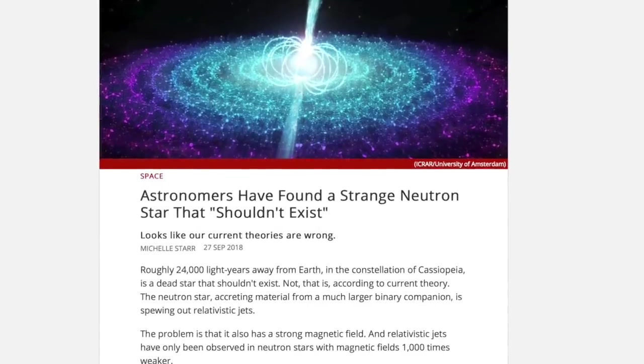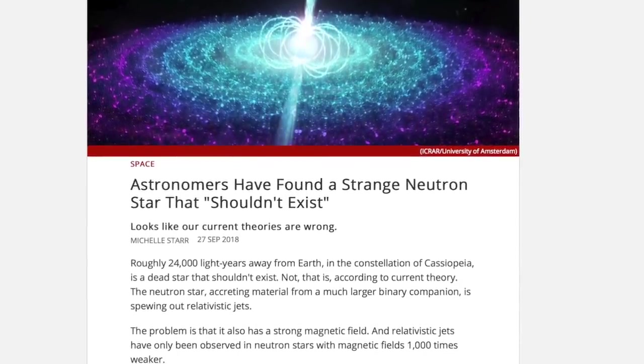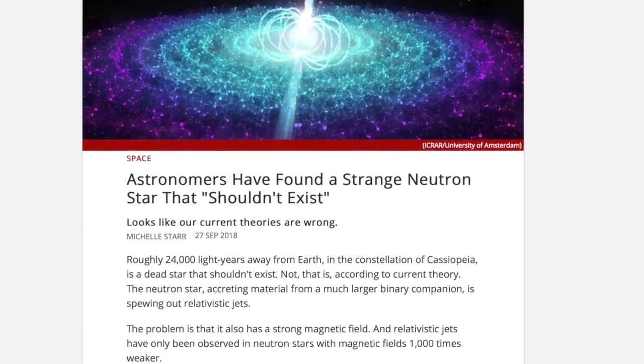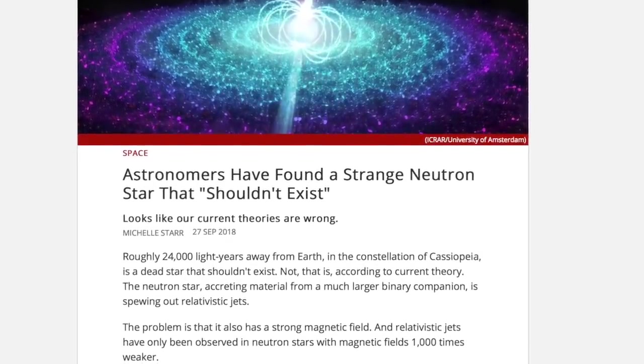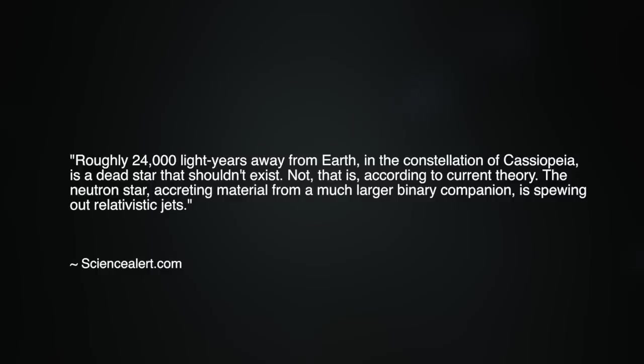And today, scientists are again puzzling over the behaviors of a so-called neutron star which completely confounds their theoretical models. As reported by Science Alert on September 27, 2018, roughly 24,000 light-years away from Earth in the constellation of Cassiopeia is a dead star that shouldn't exist. Not, that is, according to current theory. The neutron star, accreting material from a much larger binary companion, is spewing out relativistic jets.